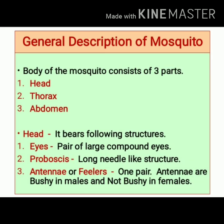Let's see the general description of the mosquito. The body of a mosquito consists of three parts: head, thorax, and abdomen. The head of the mosquito shows presence of eyes, proboscis, and antennae or feelers. The mosquito shows presence of a pair of large compound eyes. The proboscis is a long needle-like structure. There is one pair of antennae on the head. These antennae are bushy in male mosquitoes and not bushy in female mosquitoes, which helps to differentiate between males and females.